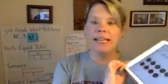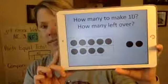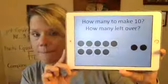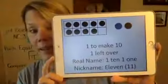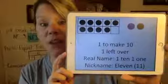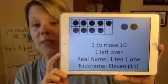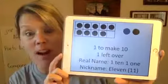How many to make ten? How many left over? One to make ten. One left over. The real name is one ten and one one. The nickname is eleven.